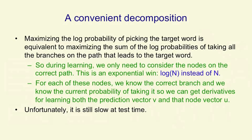For each of those nodes, we know the correct branch because we know what the next word is. We know the current probability of taking that branch by comparing the prediction vector with the learned vector at the node. And so we can get derivatives for learning both the prediction vector v and the learned vector at that node u. This makes the training hundreds of times faster.